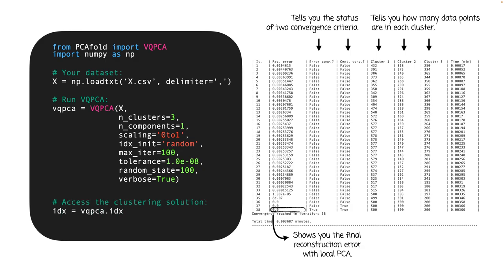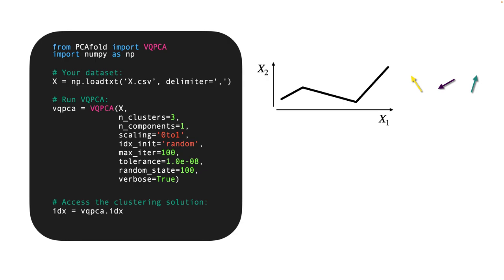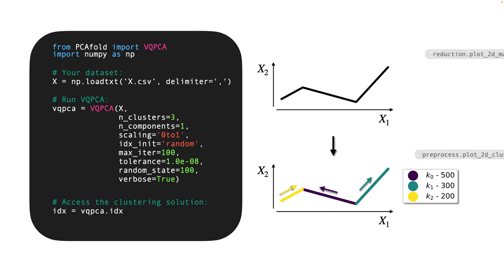And now that the VQPCA algorithm has finished, we can access the clustering solution, which is an array of class labels for each data point. And sure enough, for this dataset, this is the VQPCA clustering result. So the algorithm managed to separate each line segment into a cluster, and this required local PCA to establish the right rotation of the eigenvector so that each segment belongs exactly to the span of each eigenvector. And by the way, PCA fold contains ready plotting functions with which you can quickly visualize datasets and clustering results such as these ones.